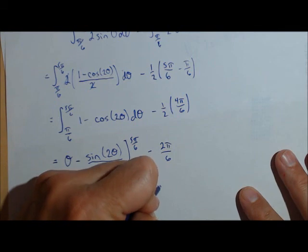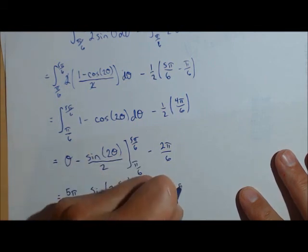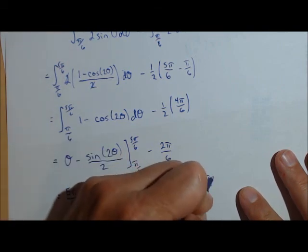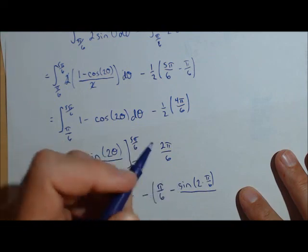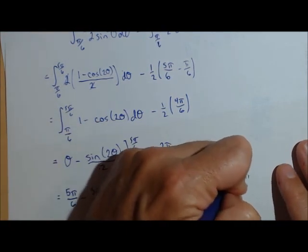Pi over 6 minus sine of 2 times just pi over 6 over 2 minus 2 pi over 6.